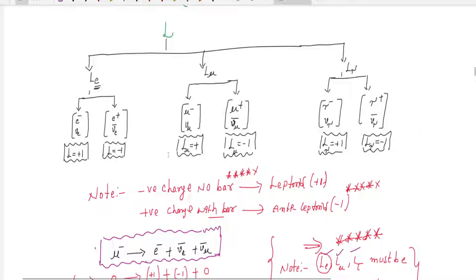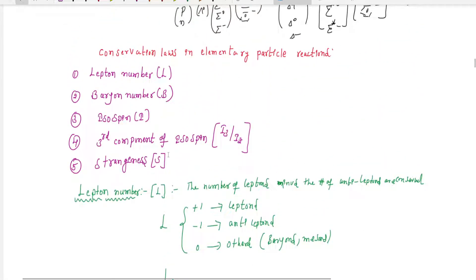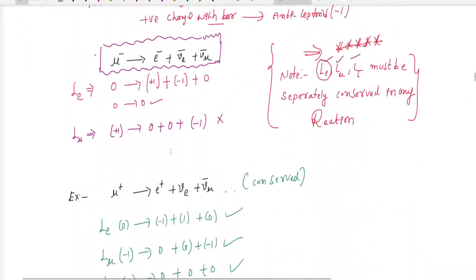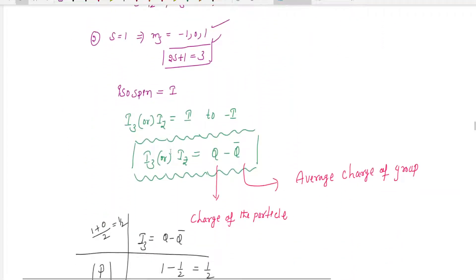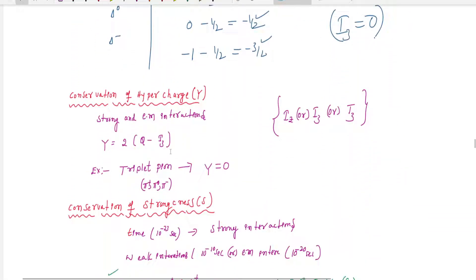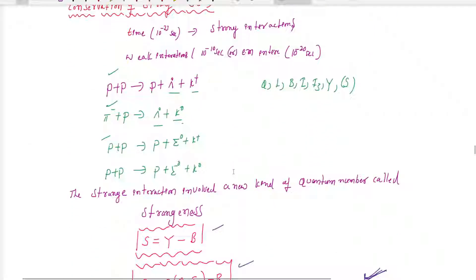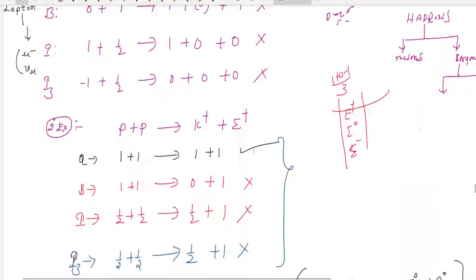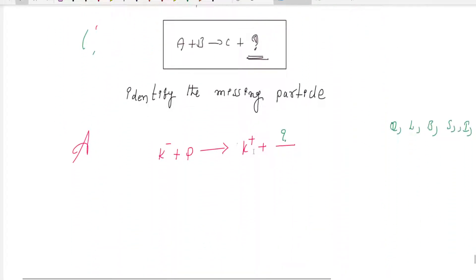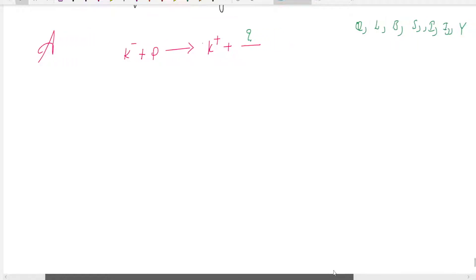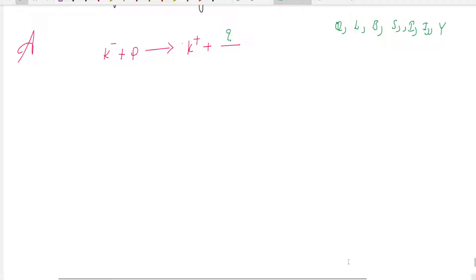Interactions — lepton and baryon numbers and all these properties are important. We need to discuss how missing particles are found by using these fundamental rules. Y is the hypercharge. Strangeness number is also there — all the properties are there. I am going to use all these properties to find the missing particle. Today I'm going to discuss at least three examples.